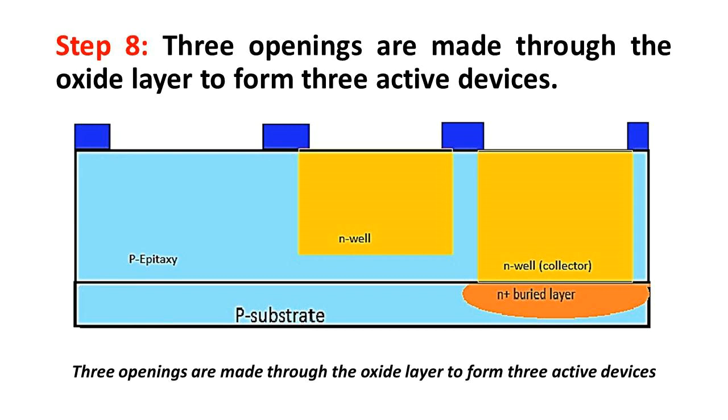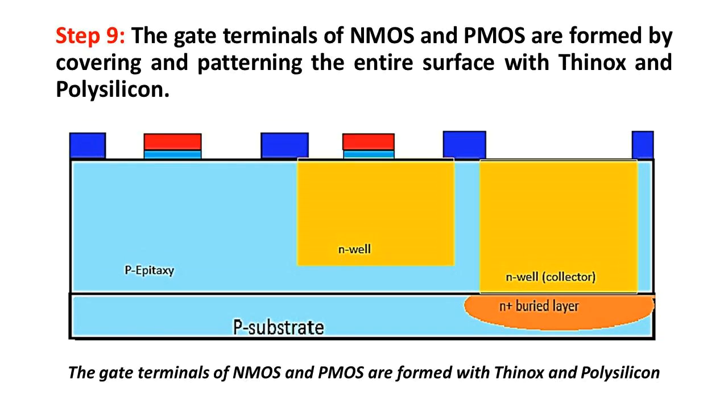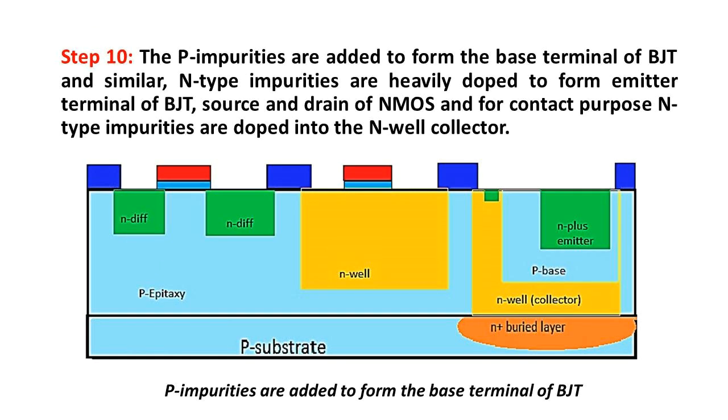Step 8: Three openings are made through the oxide layer to form three active devices. Step 9: The gate terminals of NMOS and PMOS are formed by covering and patterning the entire surface with thin oxide and polysilicon.